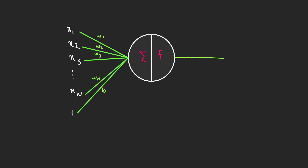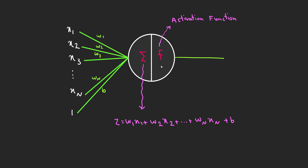To summarize and generalize: we have inputs x1 through xn with corresponding weights, plus a bias term. The neuron has two parts. The first part computes the linear combination Z = W1·X1 + W2·X2 + … + Wn·Xn + B, which is called the input to the neuron. The second part applies an activation function to Z, and the output of the neuron is denoted by h.